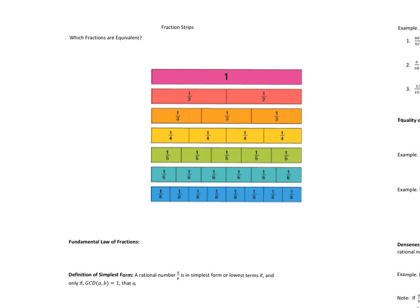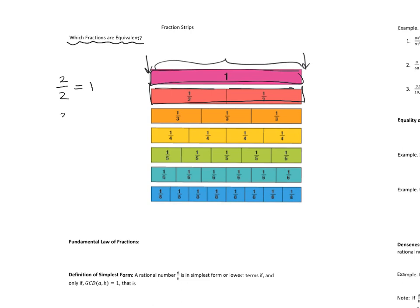Now we look at fraction strips, which are common manipulatives used in elementary school so students can line up fractions to see which are visually equivalent. The baseline is one whole strip. It takes two one-half pieces to make one, so 2/2 = 1. Similarly, three thirds makes one, four fourths makes one, and so on. Pause and look at the fraction strips to identify which fractions are equivalent.